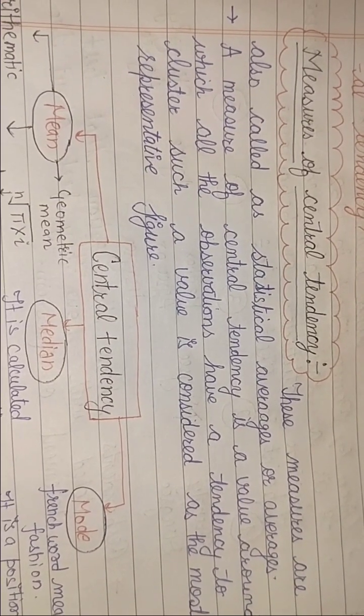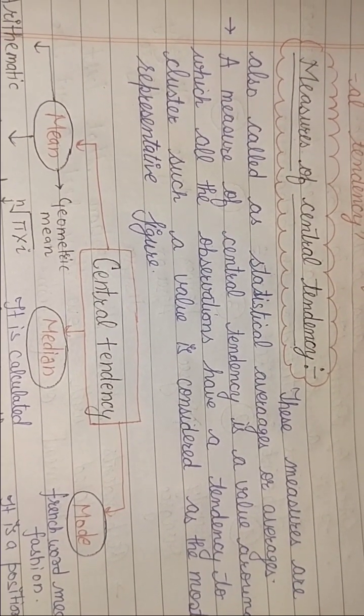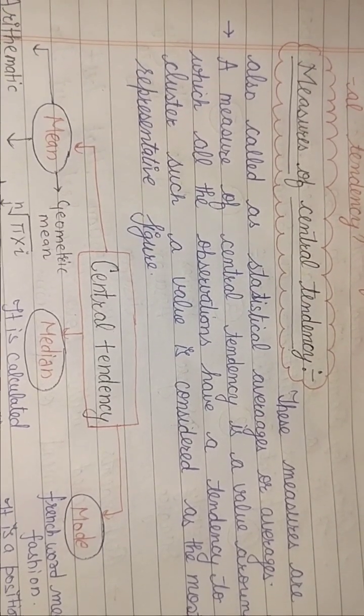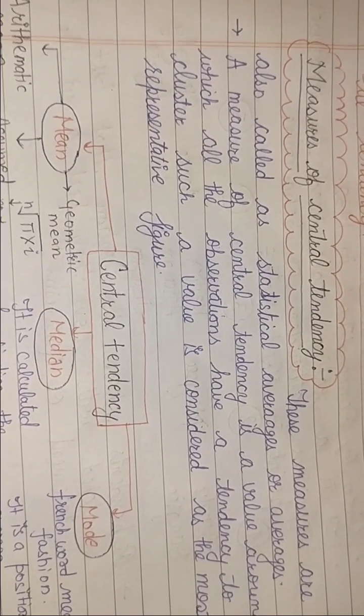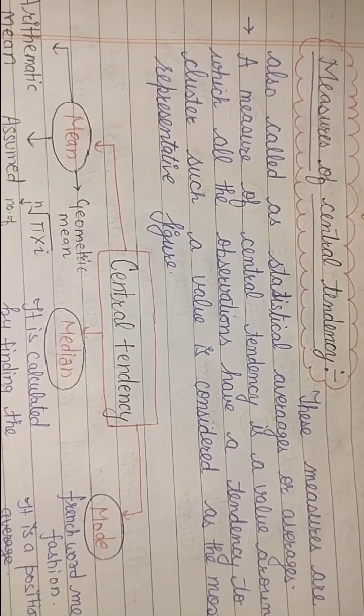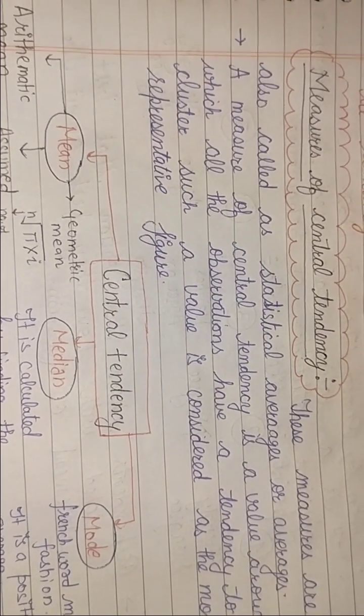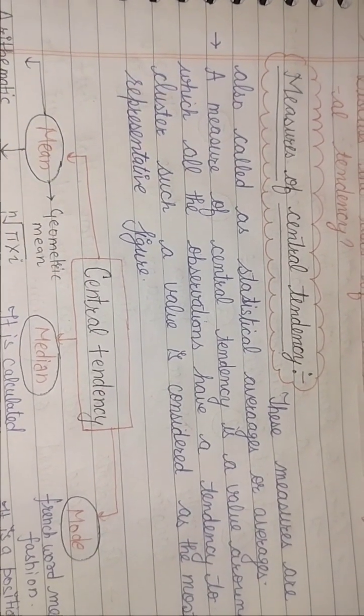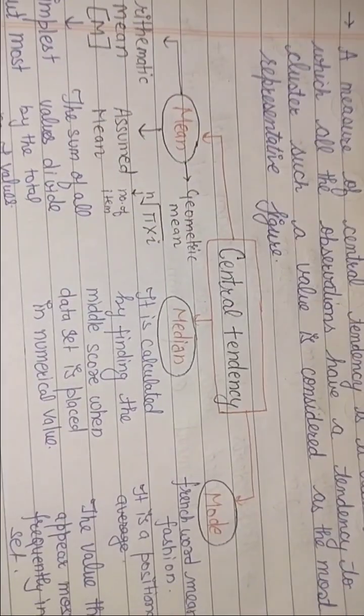Ye measures of central tendency ya central tendency - iske name se clear hai ki center mein jo hamare paas figure aayega, sabse zyada representative jo hoga, usse hum bolenge central tendency. Ab three types se hum isko check kar sakte hai. Agar main bolun ki mere paas koi bhi data hai, aur us mein se jo sabse zyada representative figure hai, usko main central tendency maanke chalungi.